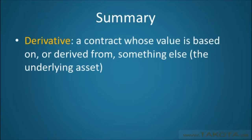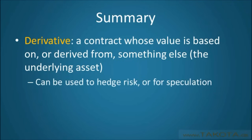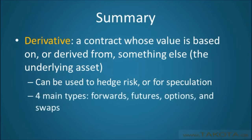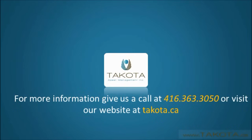So we have seen that derivatives are contracts whose value is based on something else. We have seen that they can be used for either hedging or speculating, and we have briefly touched on the four main types. This brings our overview of financial derivatives to a close, but please stay tuned for our videos on forwards, futures, options, and swaps. Thanks for watching, and as always, if you have any further questions, please do not hesitate to give us a call or visit our website.